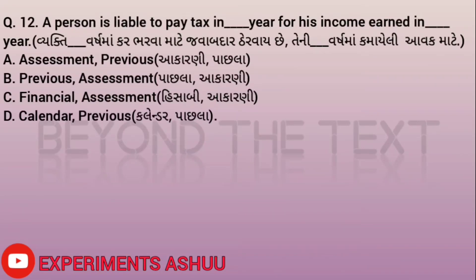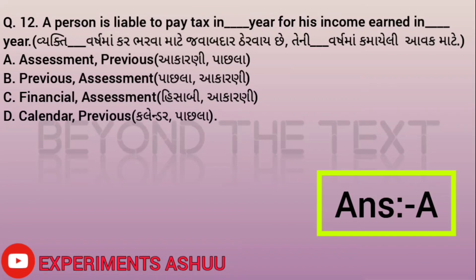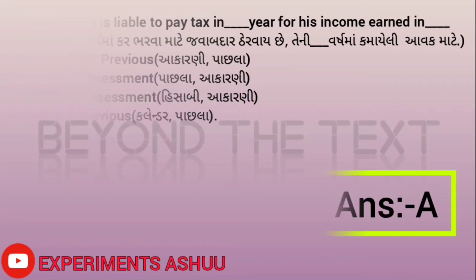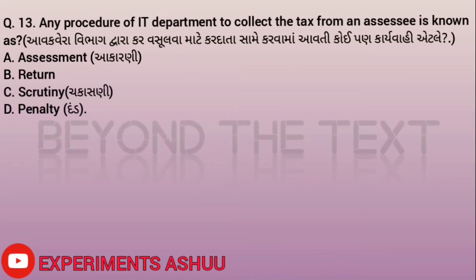Question twelve: If a person is liable to pay tax in blank year for his income earned in blank year. There are two blanks. The options are: A - assessment and previous, B - previous and assessment, C - financial and assessment, D - calendar and previous. The correct answer is A: a person is liable to pay tax in the assessment year for his income earned in the previous year.